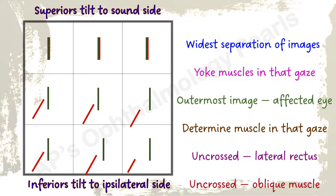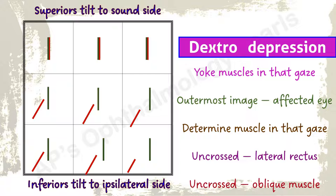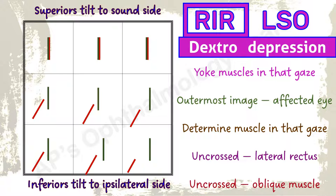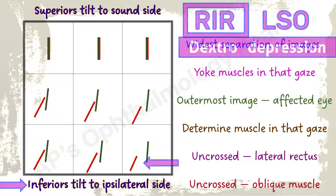Here the maximum separation of images is in dextro depression. The yoke muscles acting in dextro depression are the right inferior rectus and the left superior oblique. Red is the vertically outermost image, so the right eye is involved — there is a right inferior rectus palsy. This is a crossed diplopia, so the rectus checks out. Tilt is towards the right or ipsilateral side, so the inferior checks out.